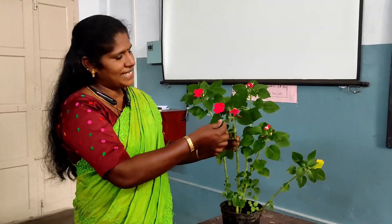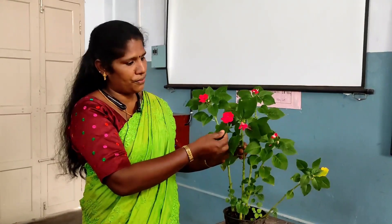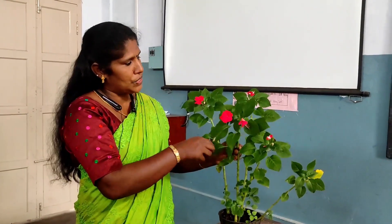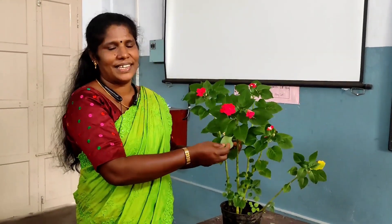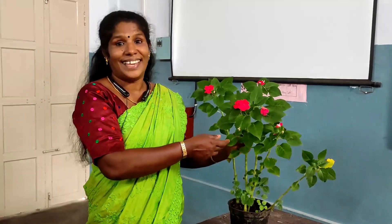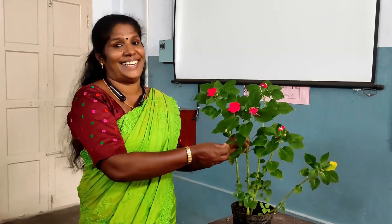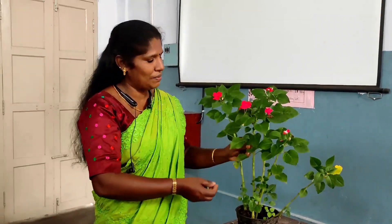What is this? This is a leaf. So many leaves are here. What is the color of the leaf? Very good. Green color.